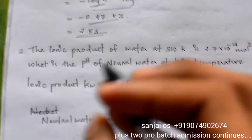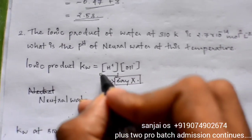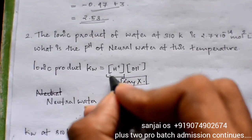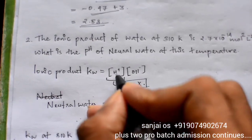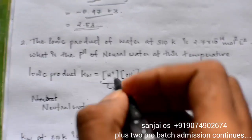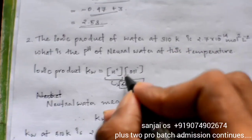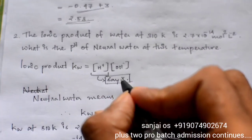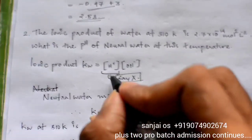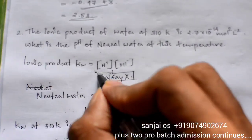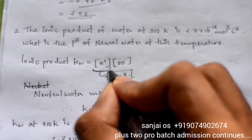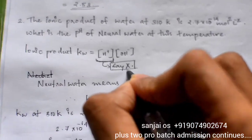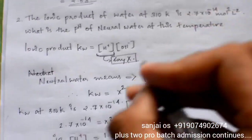The ionic product is Kw. Kw is equal to concentration of H plus into concentration of OH minus. For neutral water, concentration of H plus equals concentration of OH minus.